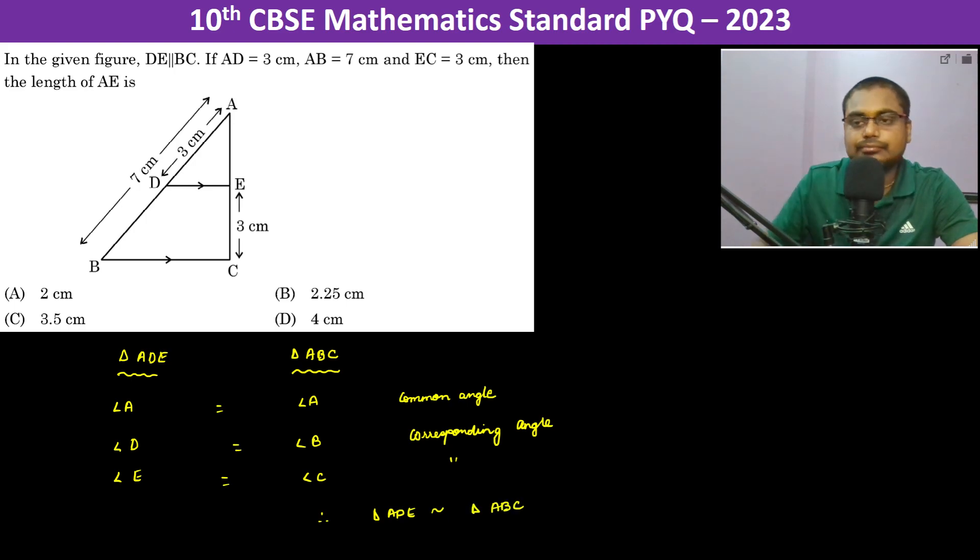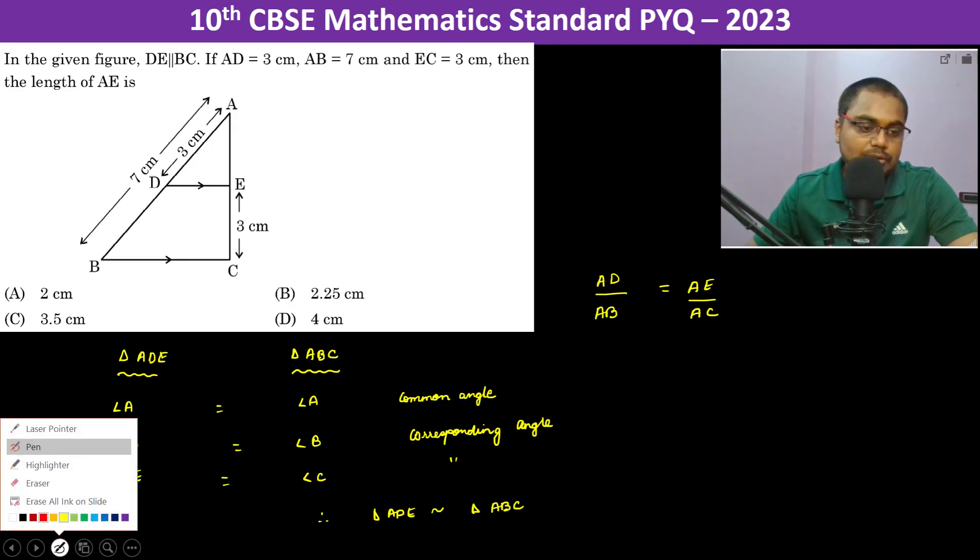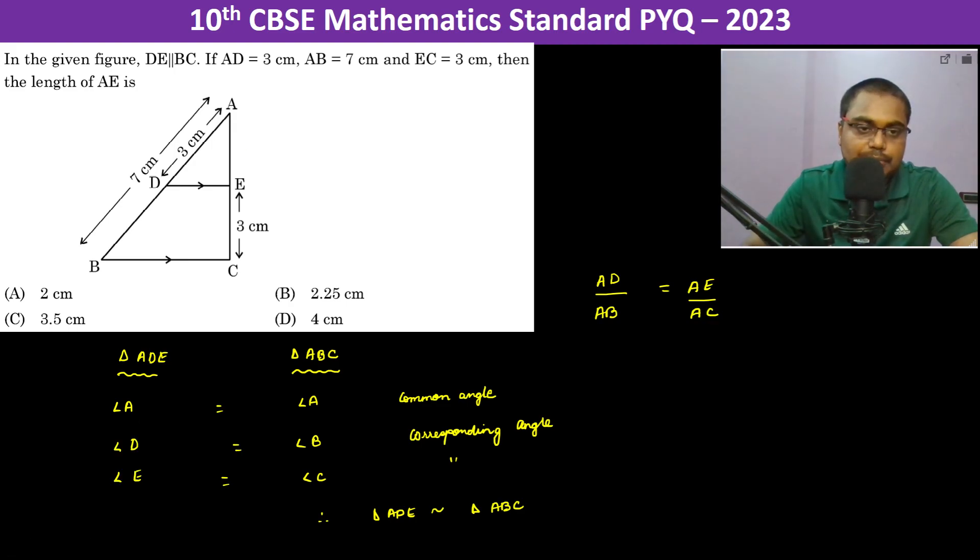Now when this is the case, we can write AD divided by AB is equal to AE divided by AC. Let AE be X, so we need to find X.